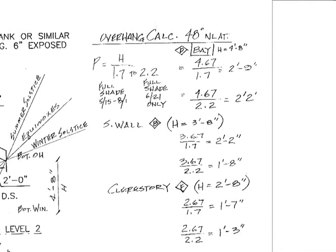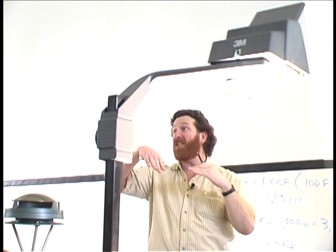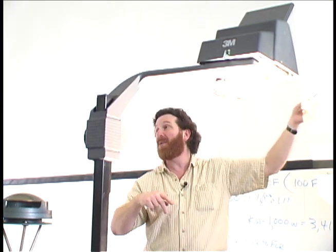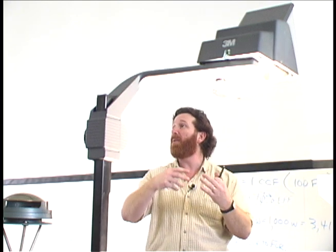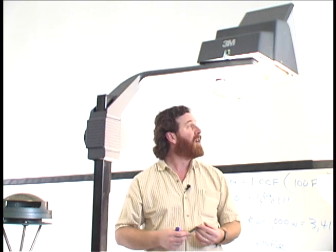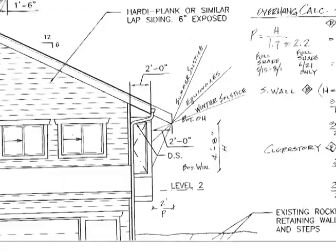It gives you a range. P is the projection of the overhang out from the side of the building. H is the dimension from the bottom of the overhang to the bottom of the window — not necessarily the height of the window. As your roof pitch changes and as the depth of your overhang changes, that H number changes. You plug in some numbers, see what you come up with, and decide how much protection you want.